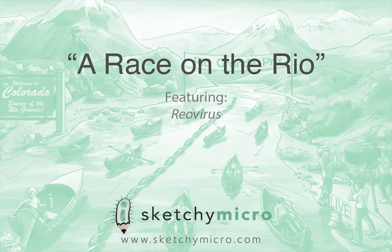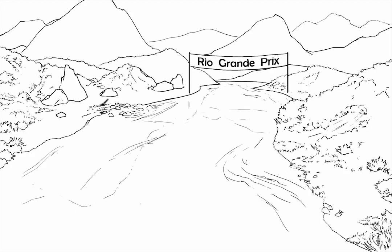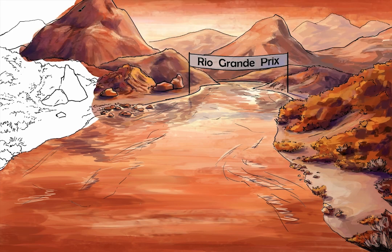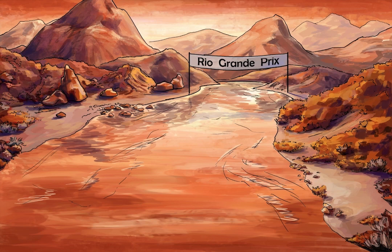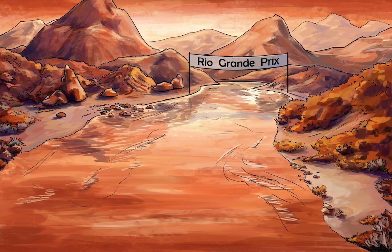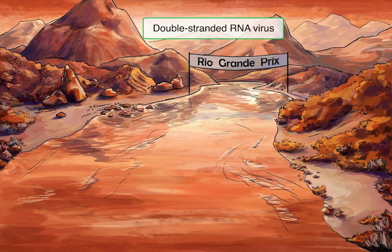Finally we get to Reovirus — the virus that just has to be a little different. It's RNA but double-stranded; I guess it couldn't make up its mind if it wanted to be RNA or DNA. It chose RNA but didn't want to fully commit. Reovirus will take place at the Rio Grand Prix in beautiful Colorado, using warm orange colors to remind you it's an RNA virus. Because it's double-stranded RNA, the positive versus negative sense classification doesn't really apply, so there's no sun or moon in the sky — it's right in between, like sunset time.